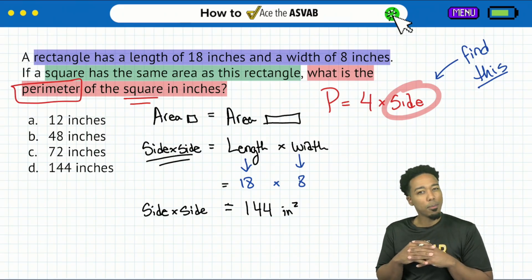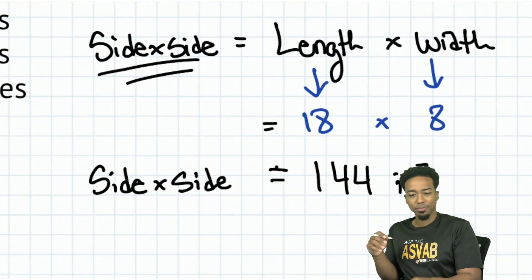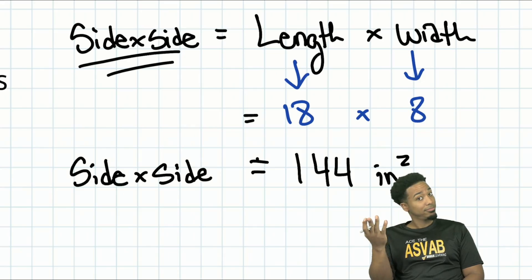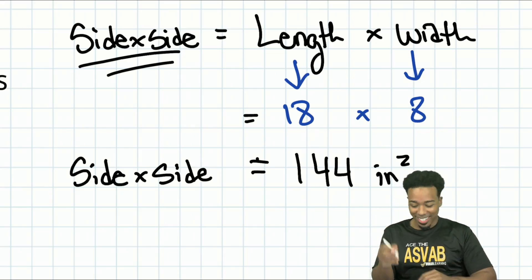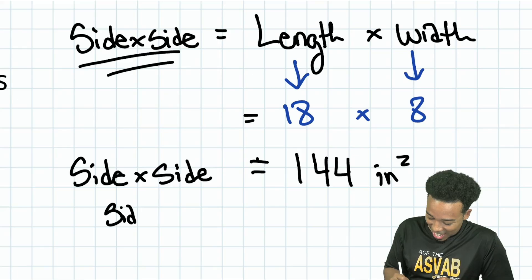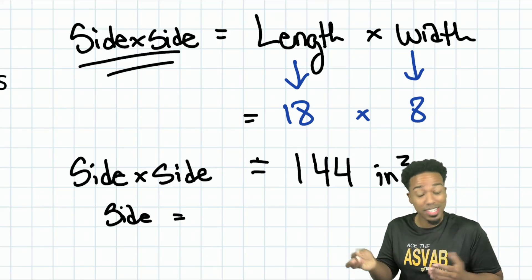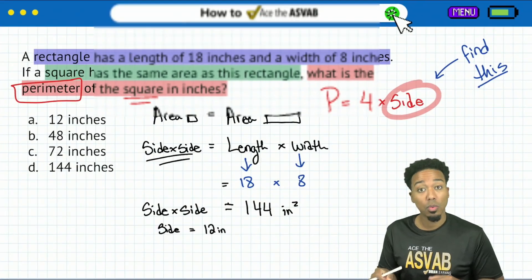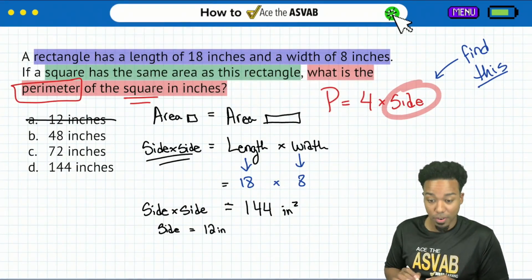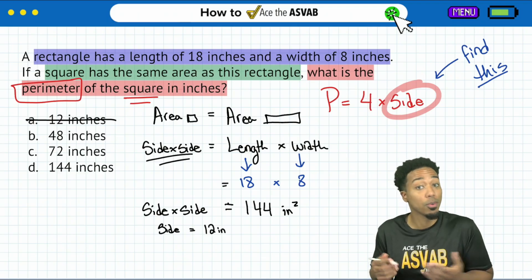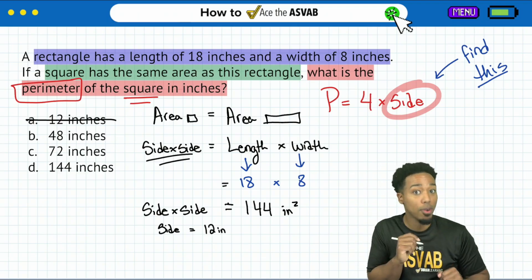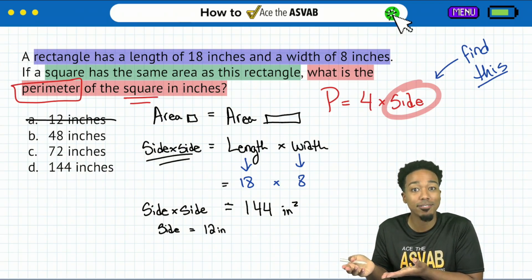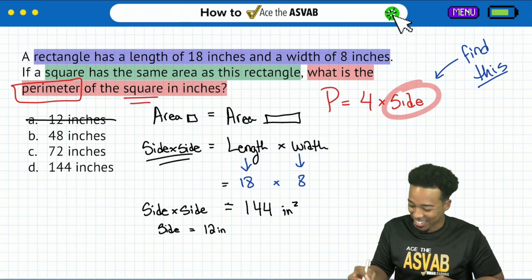And so now that we're here, what information do we have? We have that length, the length of 18, and we have that width, 8 inches. So I can plug both of those pieces in, 18 and 8. I can multiply those together. And that's going to be the same as the area of the square. All we're doing is translating that English into math. We saw that the areas are the same. I set them equal to each other. And then I just plugged in what I have.